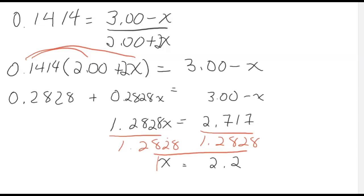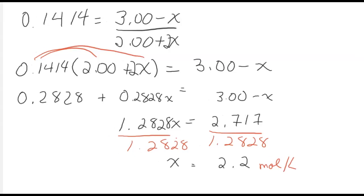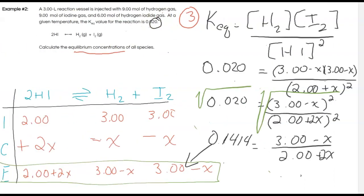Solving for X gives a value of 2.2 mol/L. This value represents the unknown in my ICE chart. I now need to go back and substitute X into each equilibrium concentration expression to find the equilibrium concentrations of all species — that is the final step in this process.